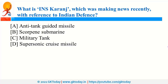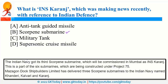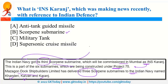INS Karanj is India's third Scorpene-class submarine, recently commissioned in Mumbai as part of Project 75. Mazagon Dock Shipbuilders Limited has delivered three Scorpene-class submarines to the Indian Navy: INS Kalvari, INS Khanderi, and INS Karanj. Indian Navy was also in news for TROPEX 21, the largest exercise by the Indian Navy, organized in the Indian Ocean region.